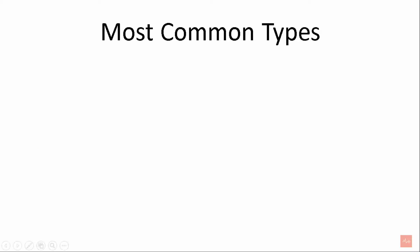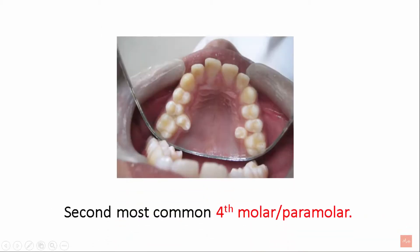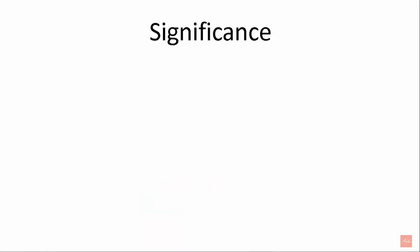Now let's see what the most common types of supernumerary teeth are. The most common type is the mesiodens — this is a conical type of supernumerary tooth occurring in between the two central incisors, which is why the name is mesiodens. The second most common type is the fourth molar, or paramolar.